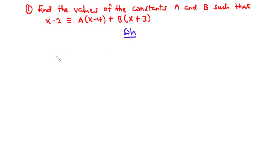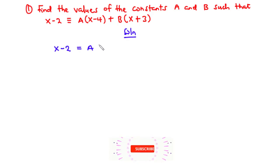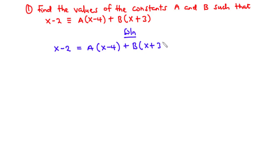In the cover-up method, we substitute a value of x into the identity so that we make one of the constants go to zero and then focus on the other constant. We have x − 2 = a(x − 4) + b(x + 3). We put x = 4. If x = 4, then 4 − 4 = 0, so 0 × a = 0, making a go to zero so we can find the value of b.